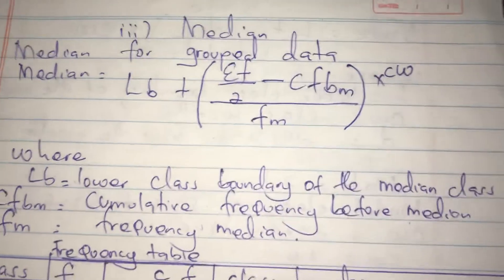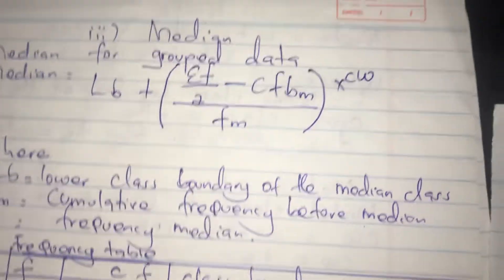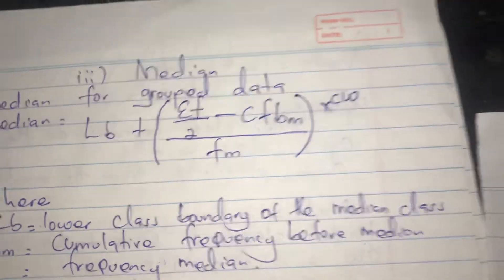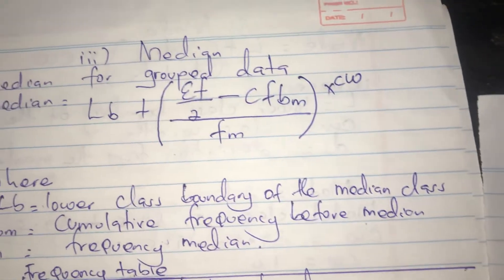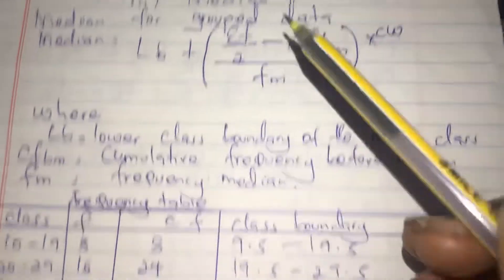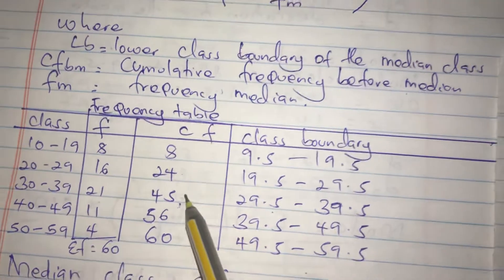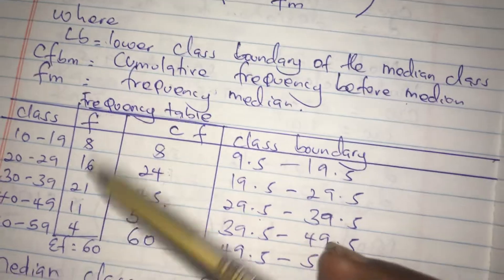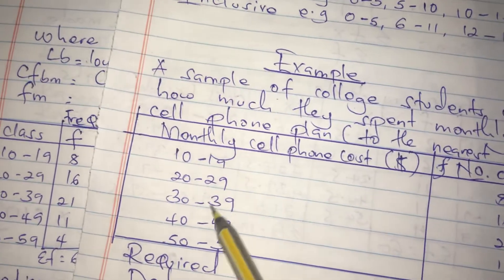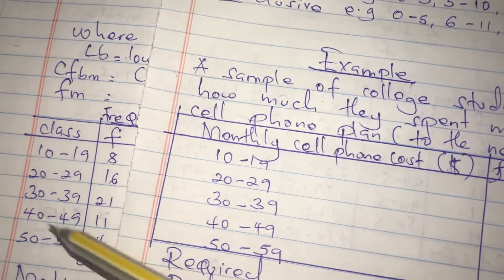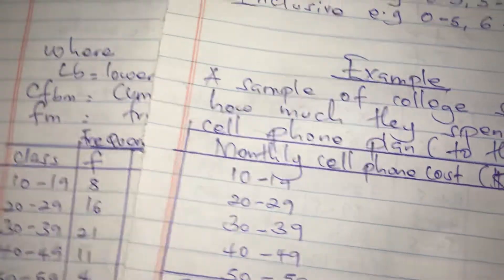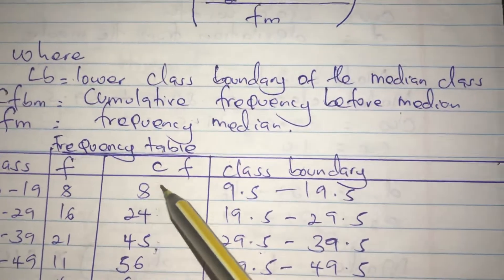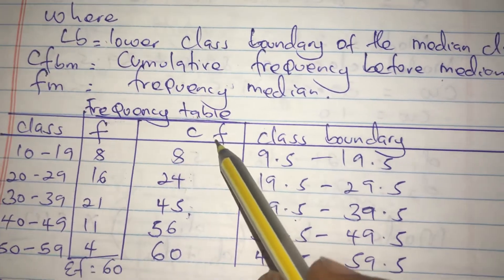When calculating the median, the main thing we need is the cumulative frequency. We are going to draw a table with the class and the frequency columns — copied straight as given — and then we add a column for cumulative frequency.